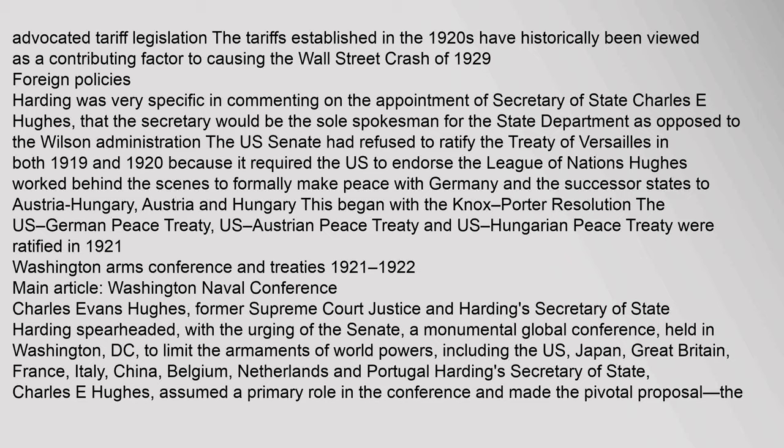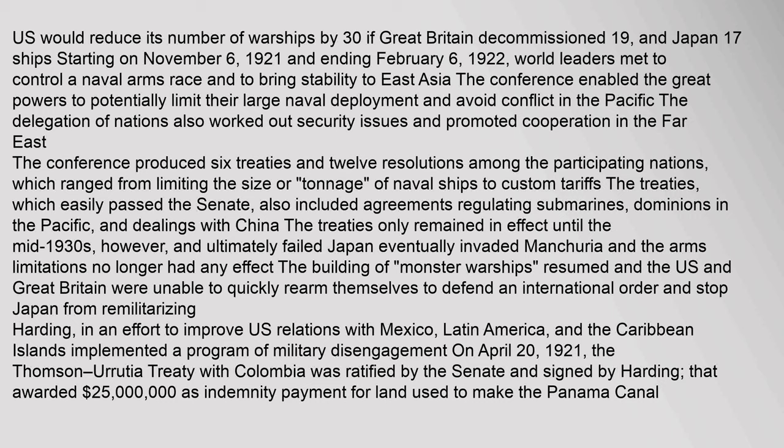World leaders met to control a naval arms race and to bring stability to East Asia. The conference produced six treaties and twelve resolutions among the participating nations, ranging from limiting the size or tonnage of naval ships to customs tariffs. The treaties also included agreements regulating submarines, dominions in the Pacific, and dealings with China. The treaties only remained in effect until the mid-1930s, however, and ultimately failed. Japan eventually invaded Manchuria and the arms limitations no longer had any effect. The building of monster warships resumed, and the U.S. and Great Britain were unable to quickly rearm themselves to stop Japan from remilitarizing.